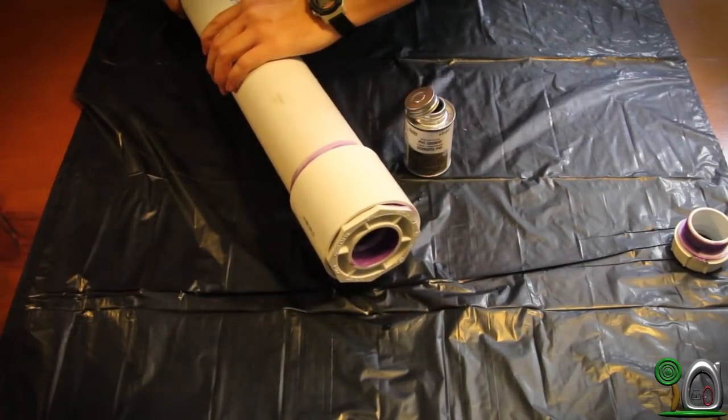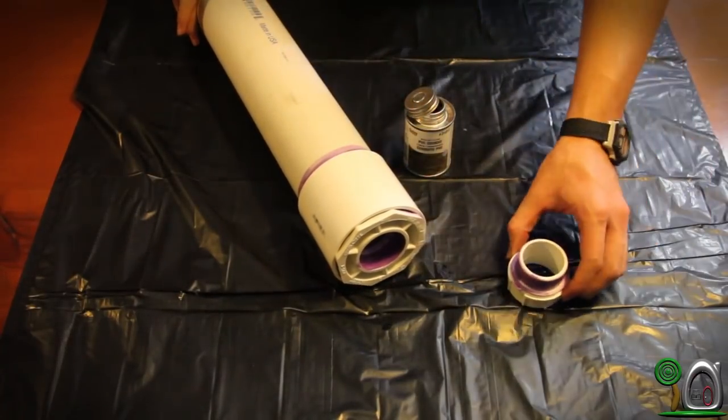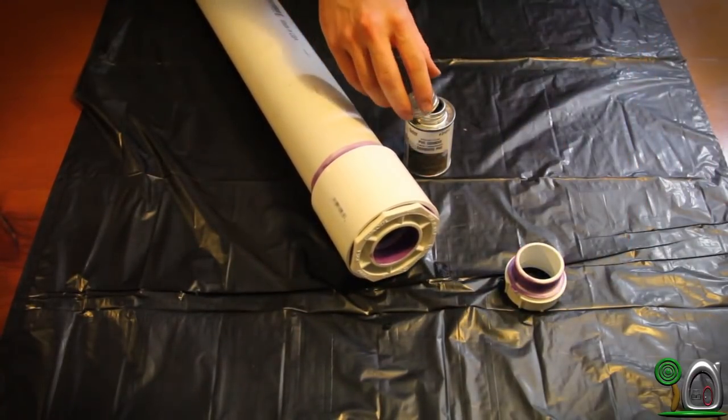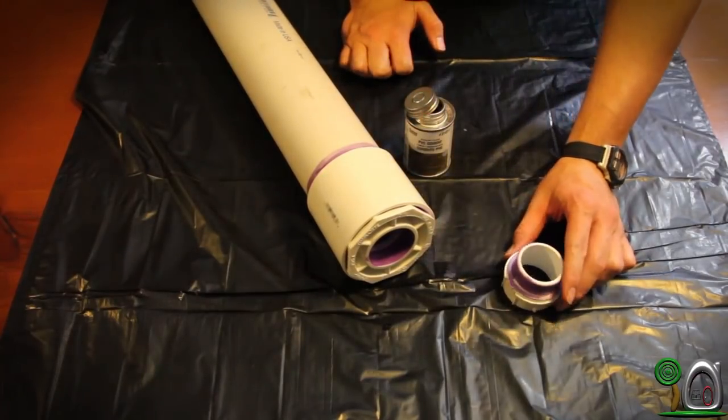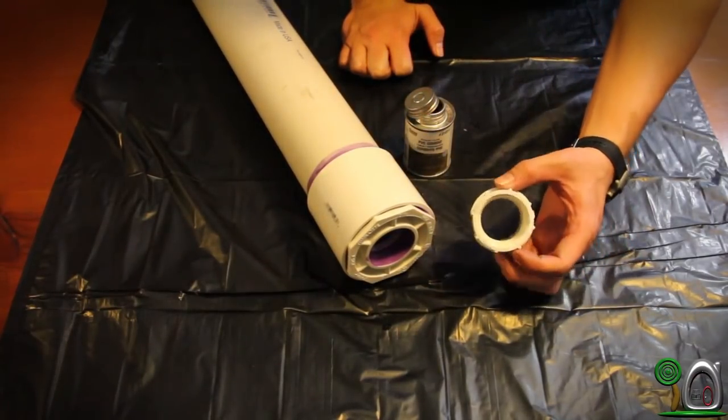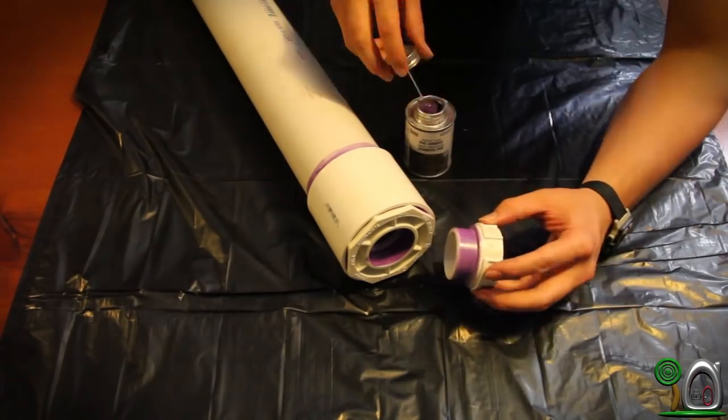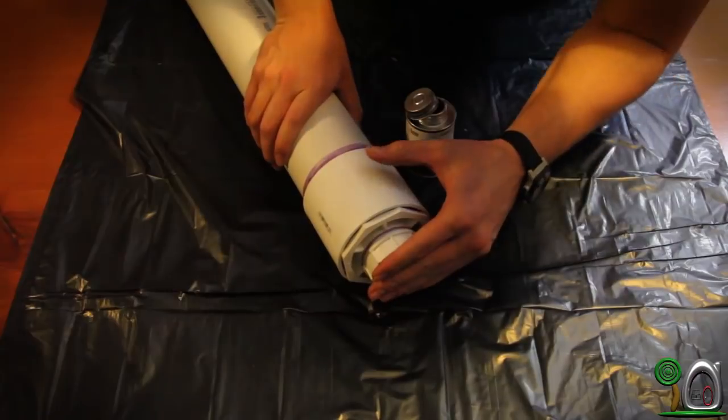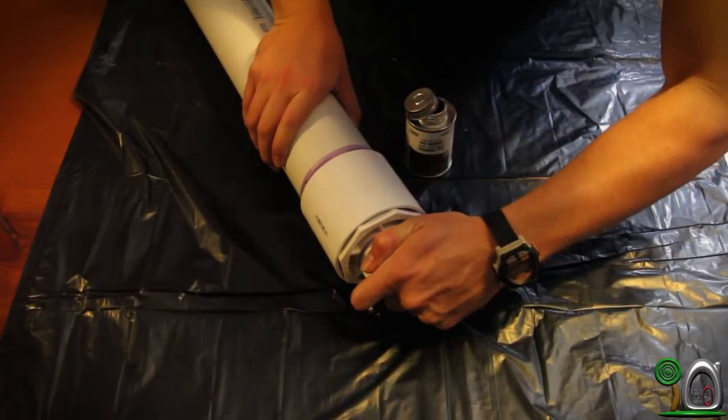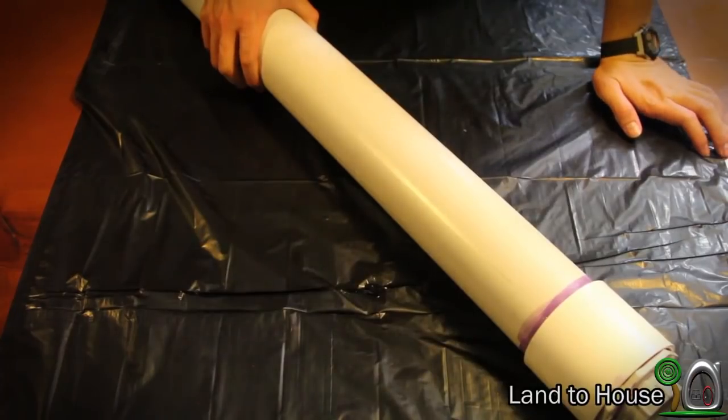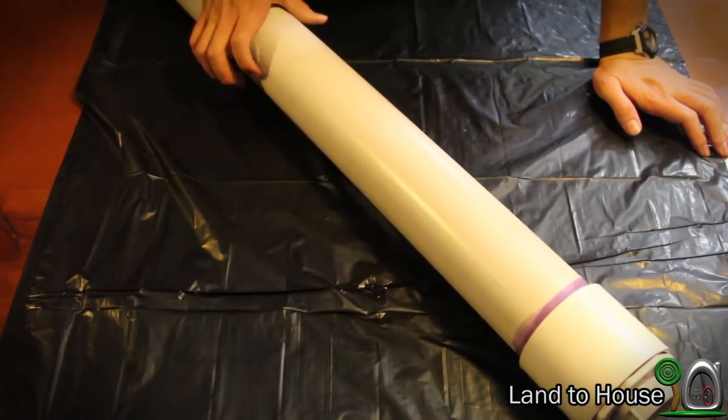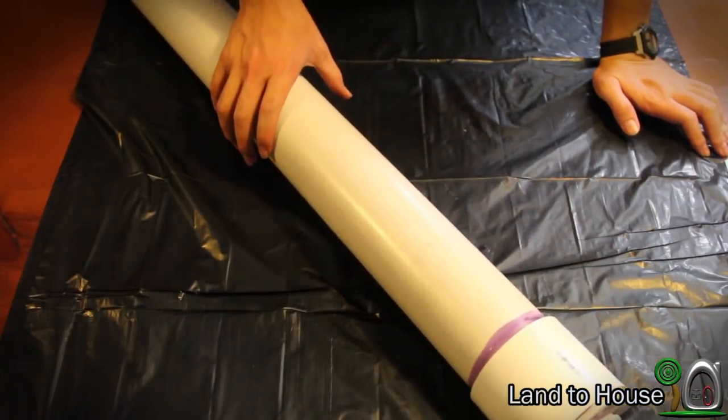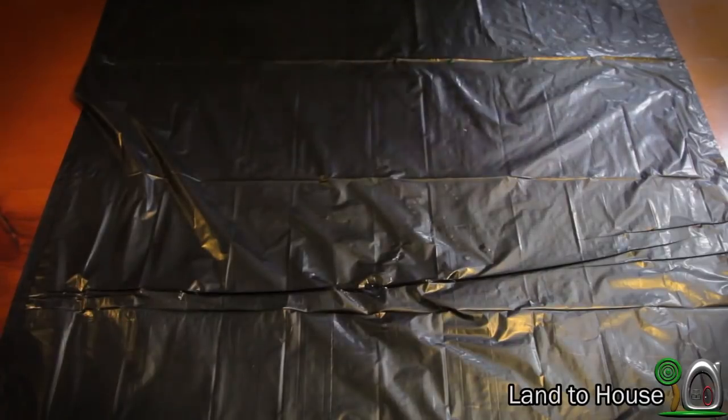Now the last part we have to connect is this piece right here, which is the 1 and a half inch thread to 1 and a half inch glue part. Just coat that and connect those pieces. The pressure tank is done, but because it is so large and cumbersome, I recommend setting it aside for a moment.